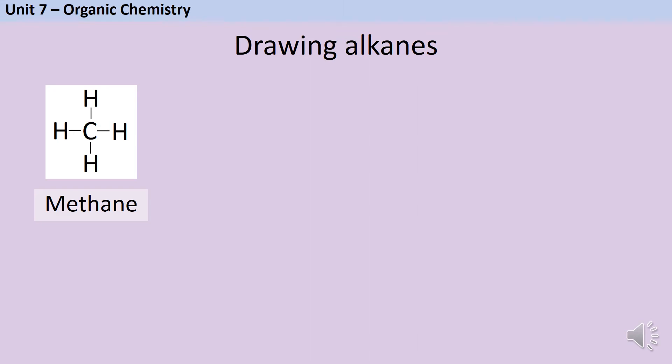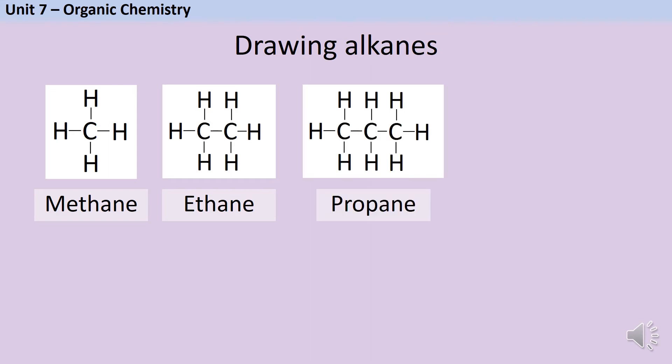So we've already met methane which is the first alkane and also ethane which is the second. So you can see here we have a chain of two carbon atoms and then hydrogens around the outside. Our third alkane is called propane and again we have this chain of carbons in the centre and then hydrogens around the outside and our fourth alkane is butane.